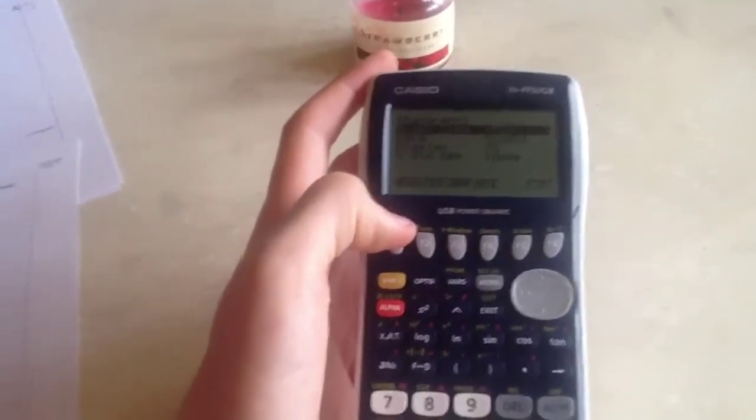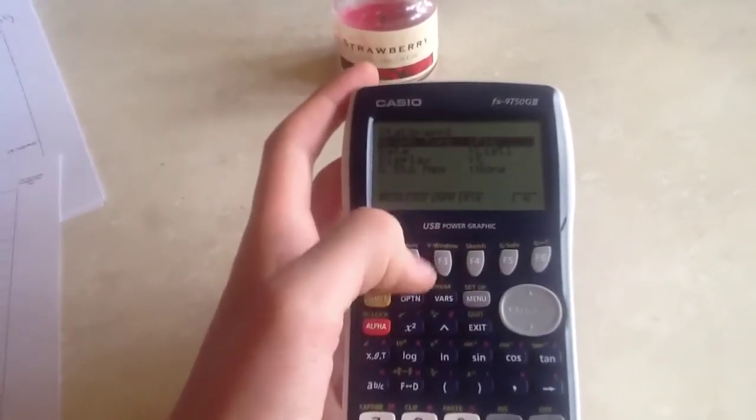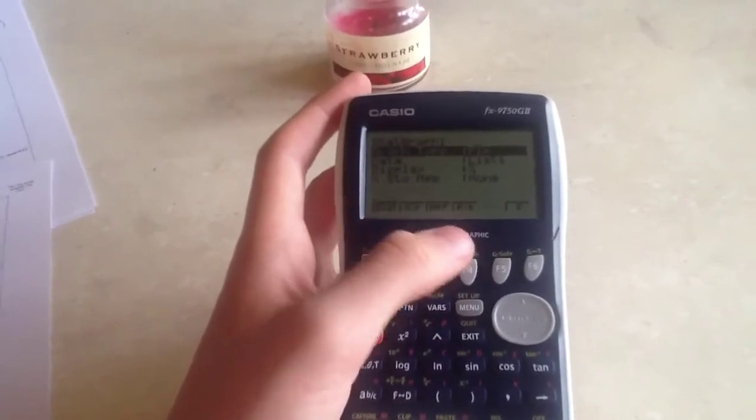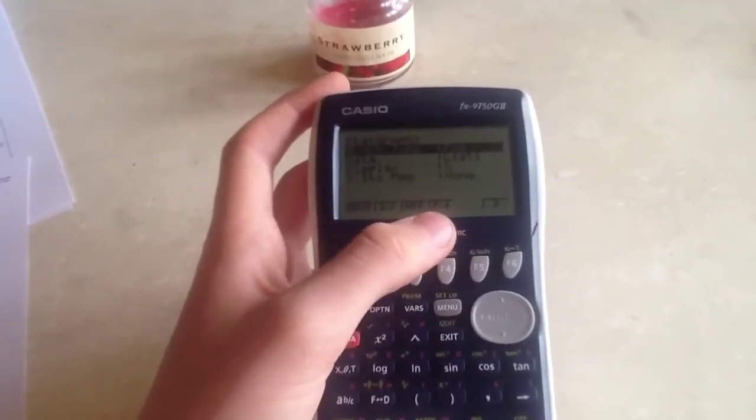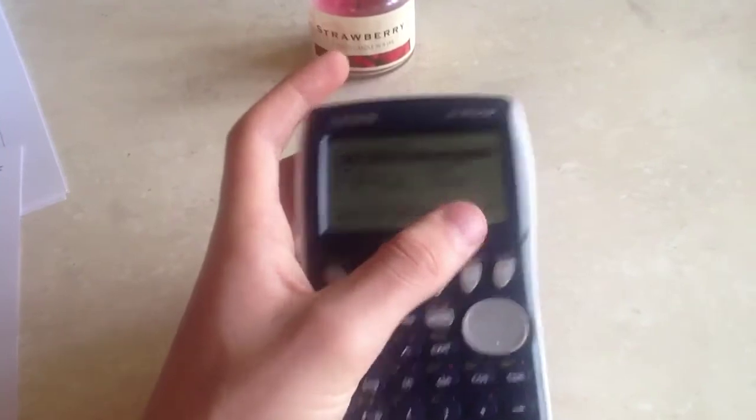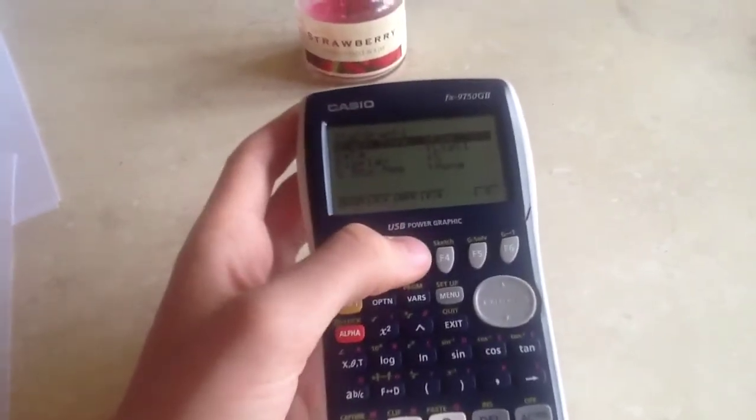press F1 for a scatter graph, F2 for an XY graph, F3 for an NPP graph, F4 for a pie chart, or you can press F6 to see other options. We're going to click F4.